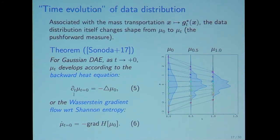Our second theorem is that for Gaussian denoising autoencoder case, as T tends to zero, the mu T develops according to the backward heat equation. Backward I mean that there is a negative sign before the Laplacian. If there is a positive Laplacian, then it is ordinary heat equation. This often happens in nature, but negative Laplacian is not natural. But we can understand this equation because denoising autoencoder is estimation process.